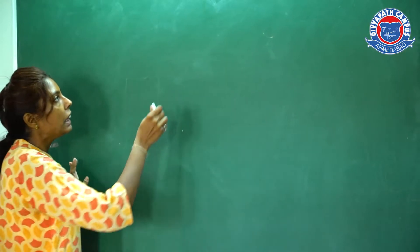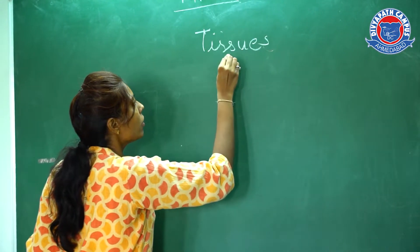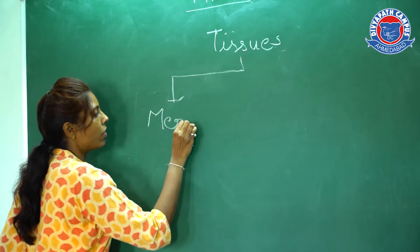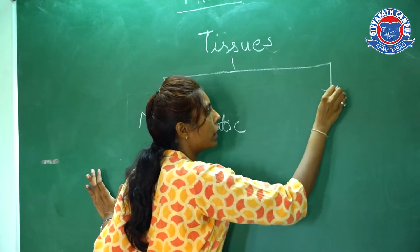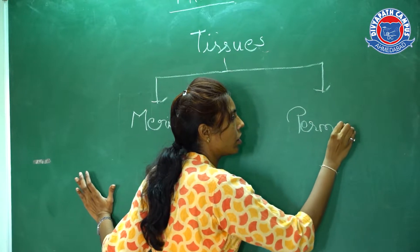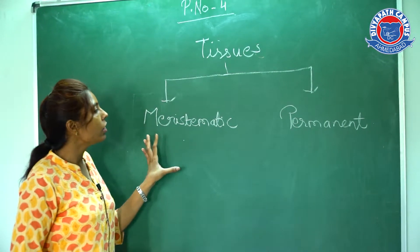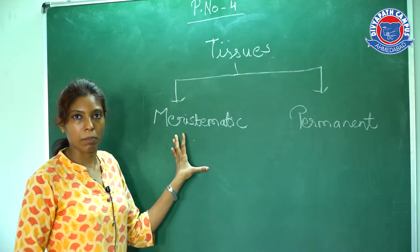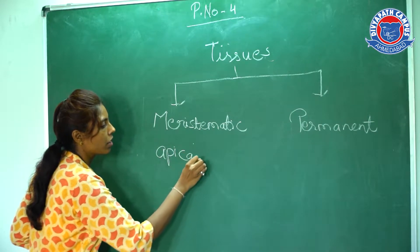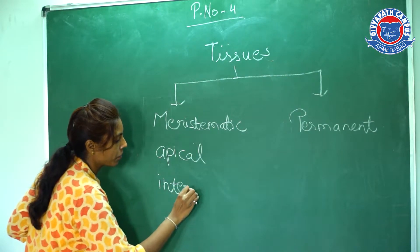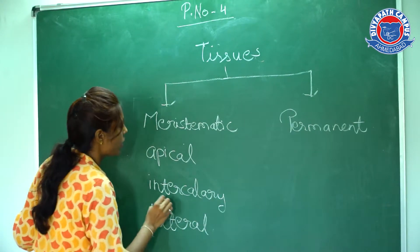Now we start with the tissue. There are two types of tissues present in a plant: one is meristematic tissue and another one is permanent tissue. Meristematic tissue is basically for growth — all the tissue has been generated from this meristem. It is again divided into three parts: the apical meristem, intercalary meristem, and lateral meristem.